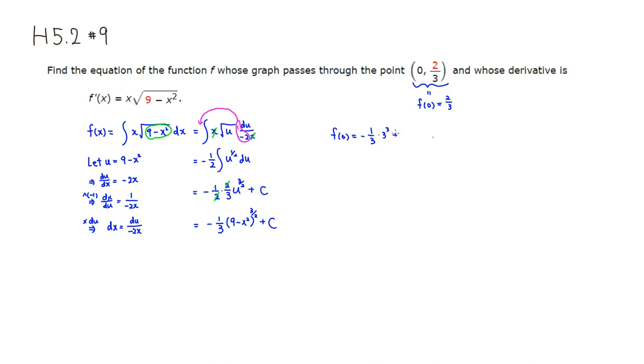And we can cancel one of the three here. So that becomes squared instead of cubed. And then you're going to get this. This is going to be negative 3 squared is 9 plus c. So this is equal to 2 thirds.